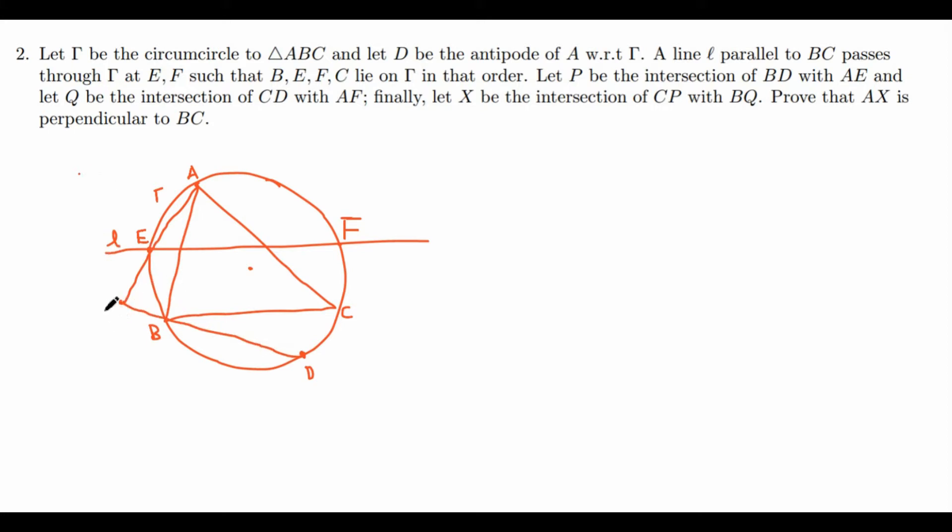And Q be the intersection of CD with AF. So AF continues and CD continues like so. And this is Q. And finally, let X be the intersection of CP with BQ.